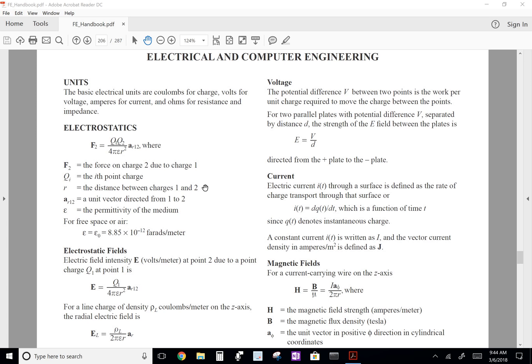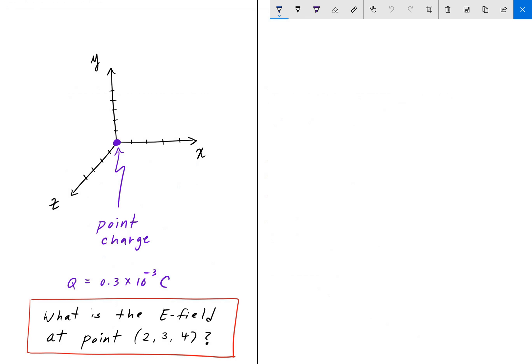So going back to our plot here, I'm going to write down that equation, dropping the direction and just worrying about the magnitude. So E equals Q over 4π epsilon R squared.